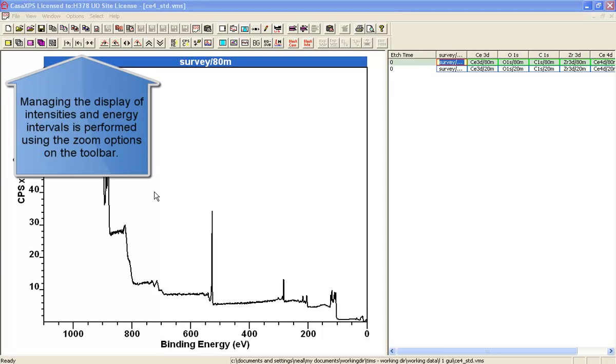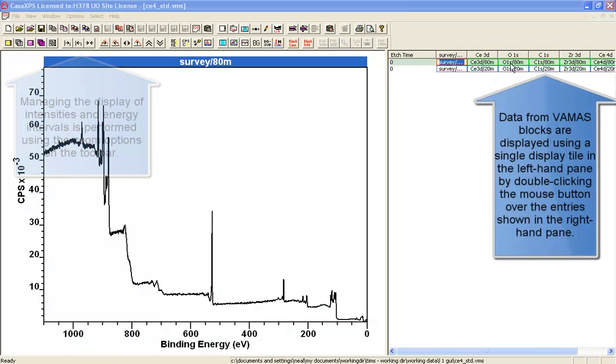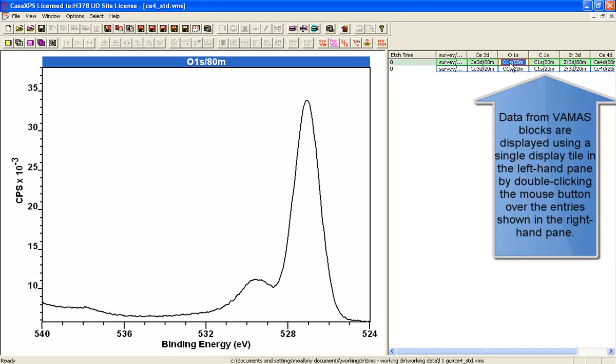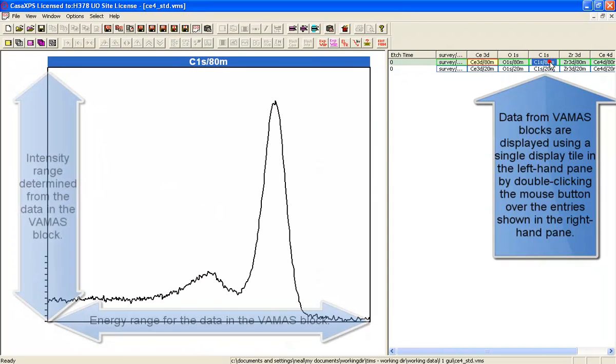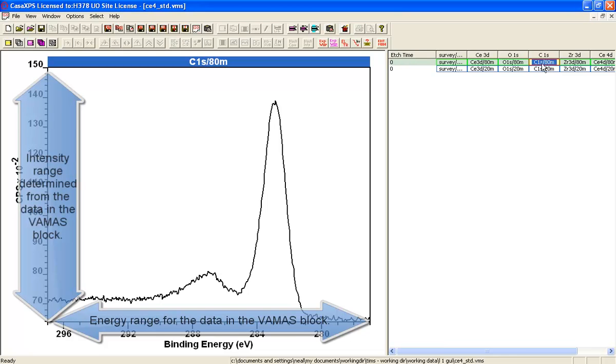Data are displayed in the left-hand side. If we double-click in the VAMAS blocks in the right-hand side, what is displayed is the set of data that's in a VAMAS block.